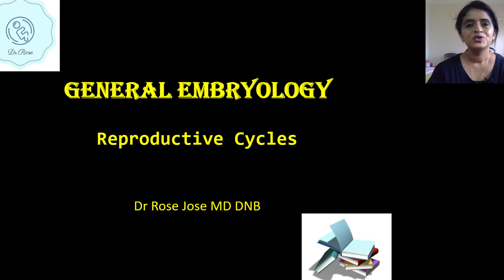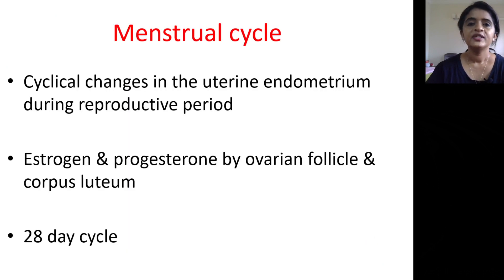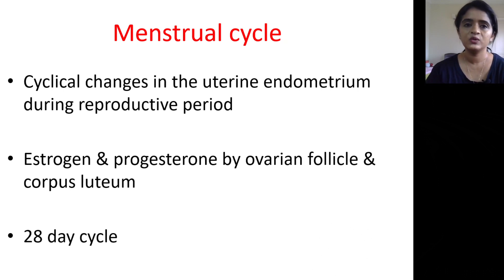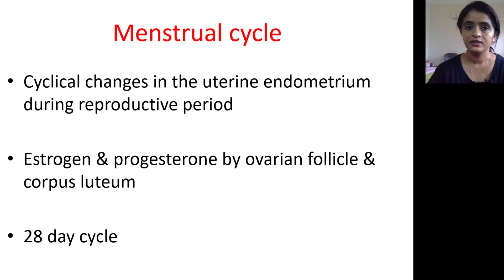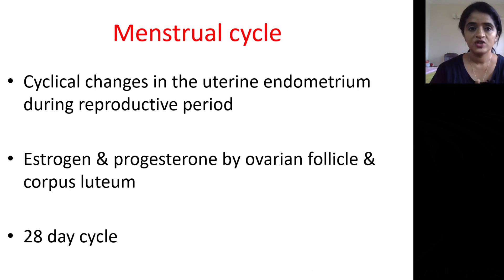Today's session is on reproductive cycles. We know there are mainly two cycles occurring in the reproductive period: one is the menstrual cycle and the other is the ovarian cycle. The cyclical changes in the uterine endometrium during the reproductive period is what is meant by the menstrual cycle. The changes in the ovarian follicles constitute the ovarian cycle. It is estrogen and progesterone secreted by the ovarian follicle and corpus luteum that drive the cyclical changes in the uterine endometrium.